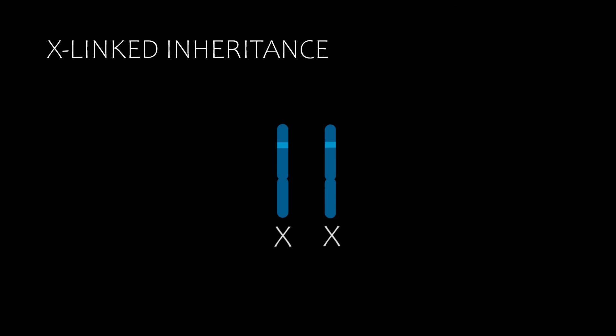X-linked dominant genes are transmitted through both parents, and the phenotype for that gene is displayed because of its dominant effect.